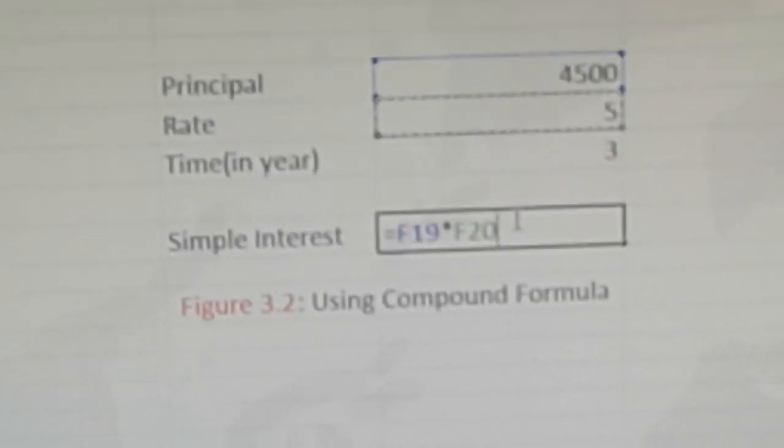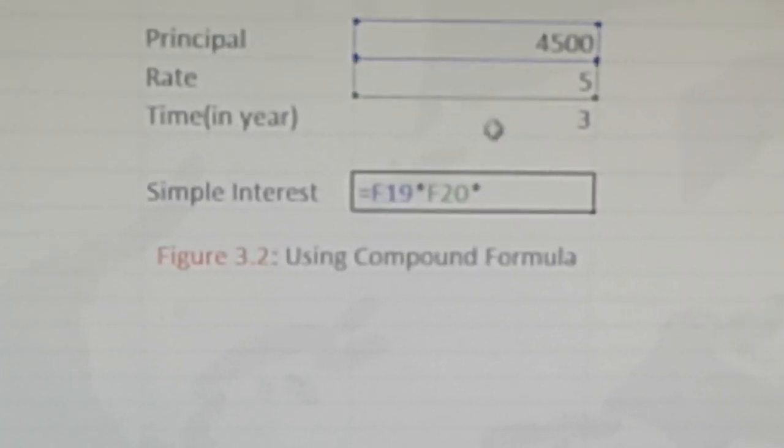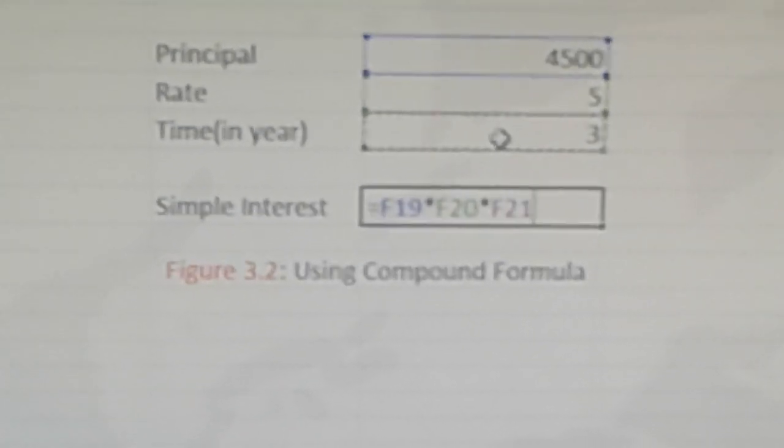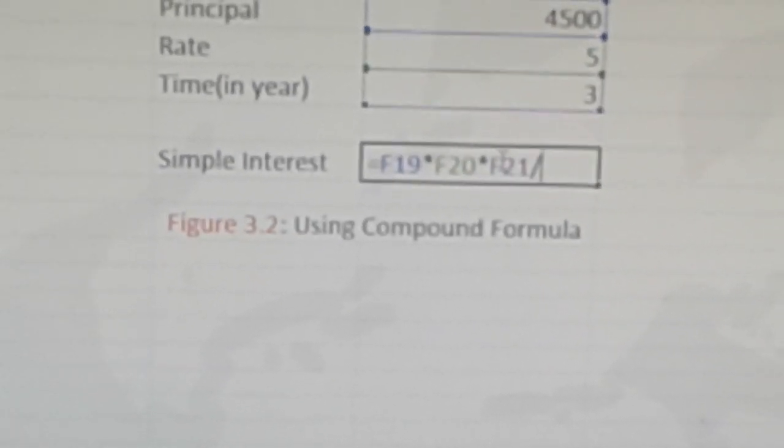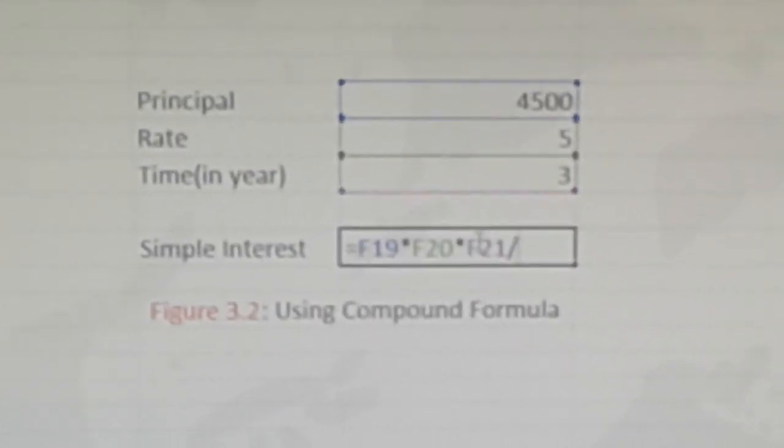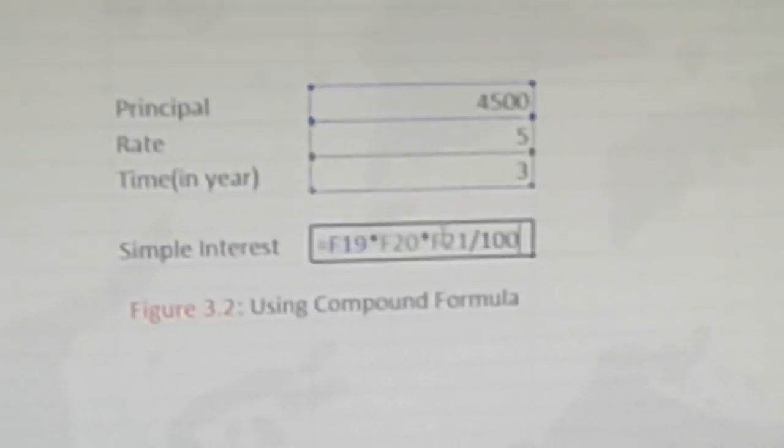Now click on the time value, then type divided by 100 from the keyboard. Just observe this formula.